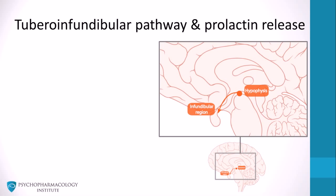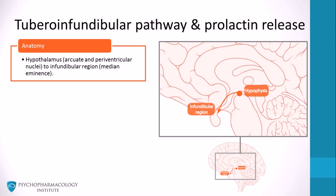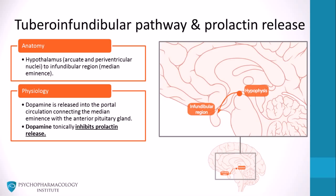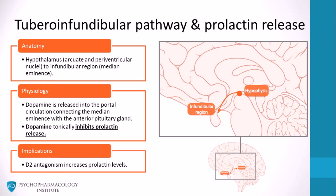Dopaminergic projections in the tuberoinfundibular pathway influence prolactin release. This tract consists of dopaminergic projections from the hypothalamus, more specifically the arcuate and periventricular nuclei, to the infundibular region, also in the hypothalamus, or median eminence. Dopamine is released into the portal circulation connecting the median eminence with the anterior pituitary gland. The role of dopamine released in the tuberoinfundibular pathway is to tonically inhibit prolactin release. Blockade of D2 receptors by drugs such as antipsychotics therefore increases prolactin levels.